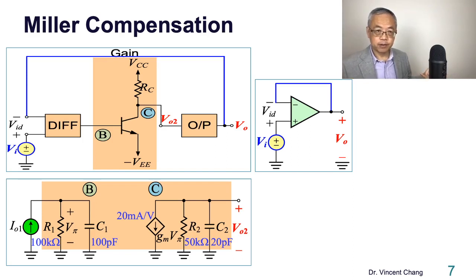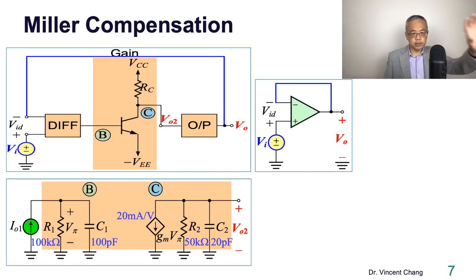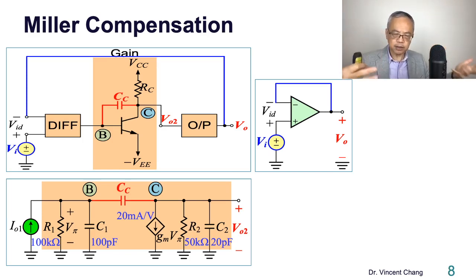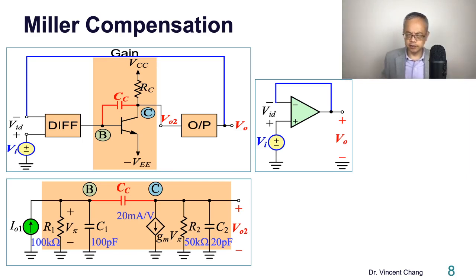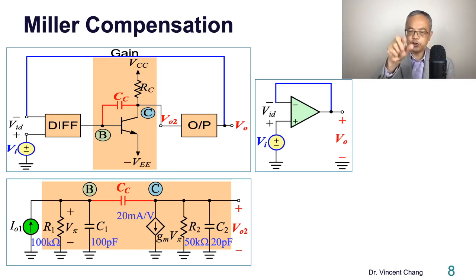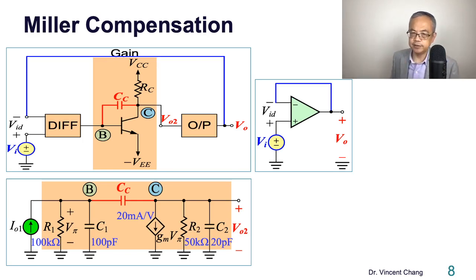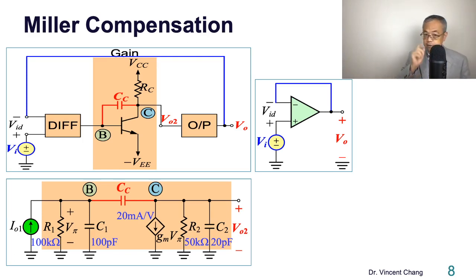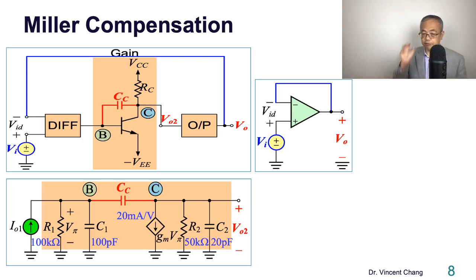The solution is Miller compensation. We use the Miller compensation technique to tackle this by connecting on-chip a compensating capacitor on the feedback path of the second stage. CC is connected between the collector and the base — the Miller compensation feedback path.